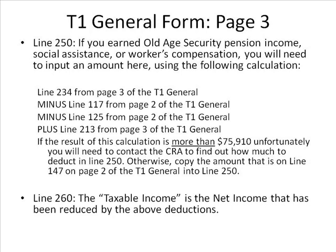Line 250: if you earned old age security pension income, social assistance, or workers compensation, input an amount using the following calculation — line 234 minus line 117 minus line 125 plus line 213 from the T1 General. If the result is more than $75,910, you will need to contact the CRA to figure out how much to deduct in line 250. Otherwise, copy the amount on line 147 into line 250. Line 260: the taxable income is the net income that has been reduced by the above deduction.